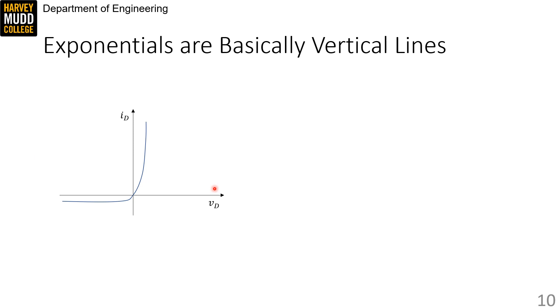That approximation relies on the observation that exponentials change very quickly. Once an exponential gets going, it grows faster than the other relevant functions. As a result, we can basically say it's a straight vertical line.